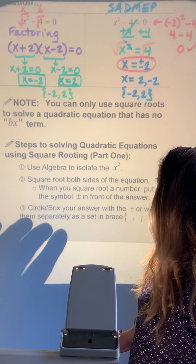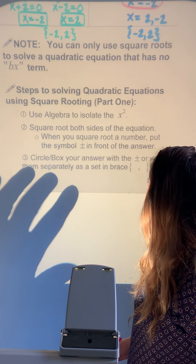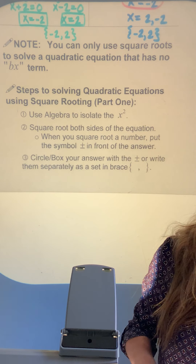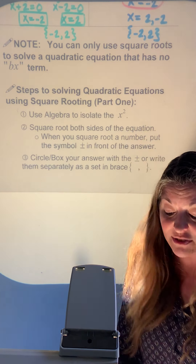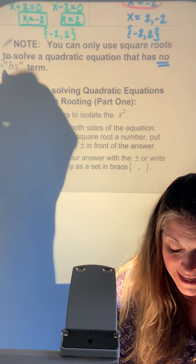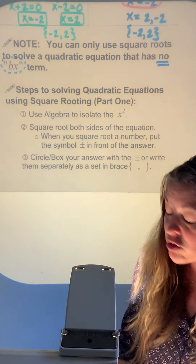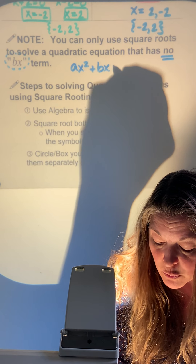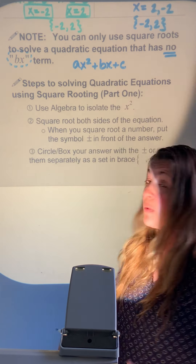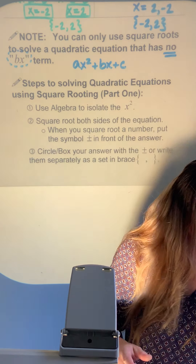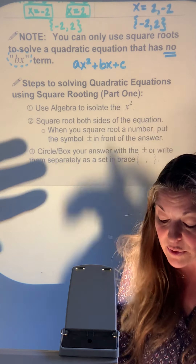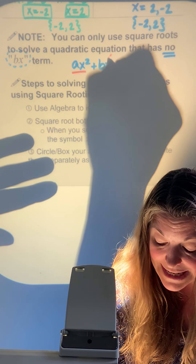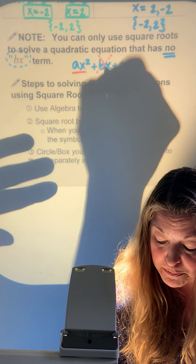You can only use the square root method for a quadratic that has no bx term. When a quadratic is in standard form, you can only use this method if you have an x squared term and a constant — you cannot have a bx term.